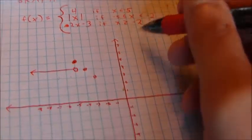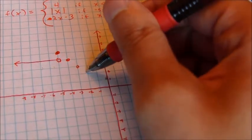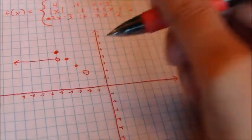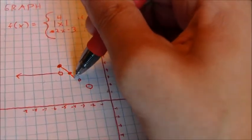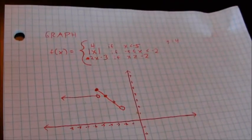And this is going to go all the way up to negative 2. But at negative 2, it can't be equal to it. It's got to be less than that. So if I put negative 2 into the absolute value function, I'm going to get positive 2. But that's got to be an open circle. And so I'm going to draw the line through like this.